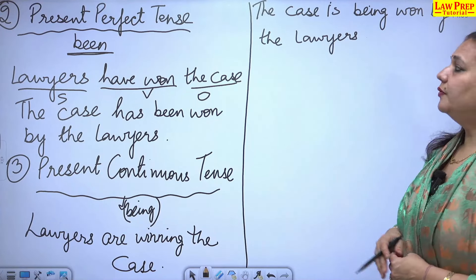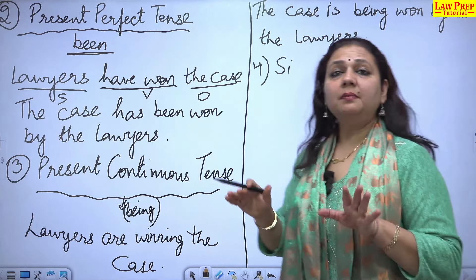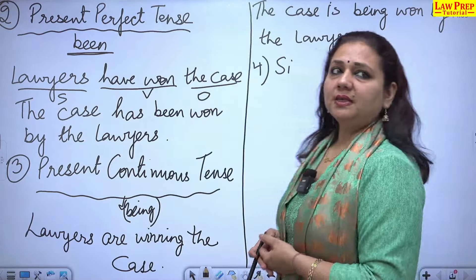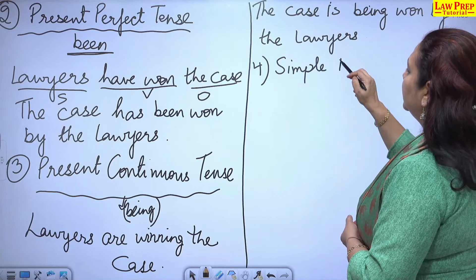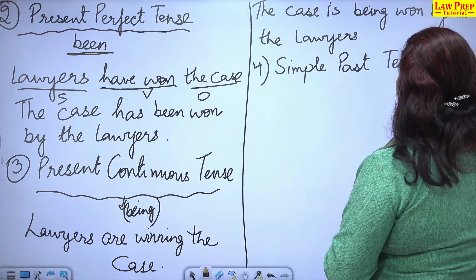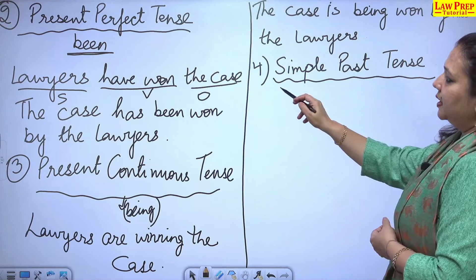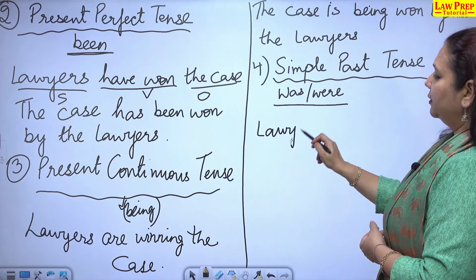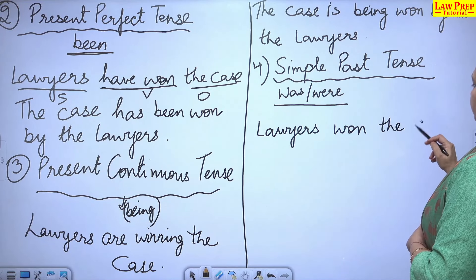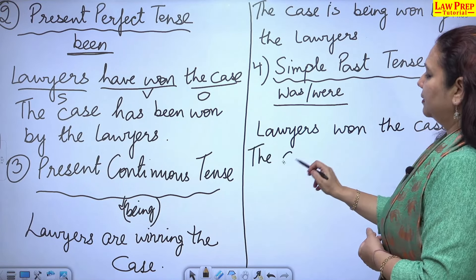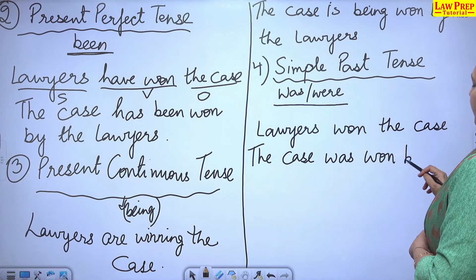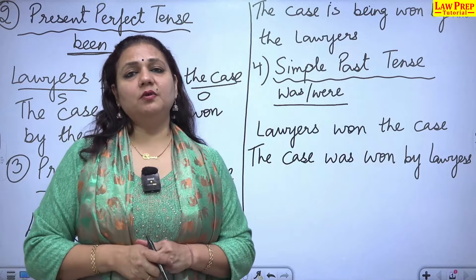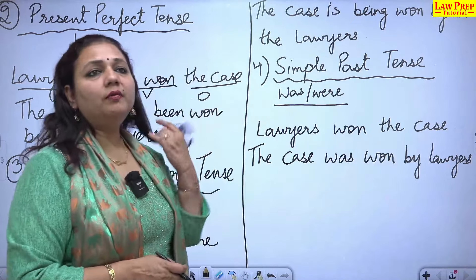Present perfect continuous would not be changed, as it does not accept the rules of passive voice. Moving on to simple past tense — we use the helping verbs 'was' and 'were.' The sentence 'lawyers won the case' changes to 'the case was won by lawyers.' You just need to be aware of which helping verb to use.